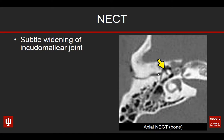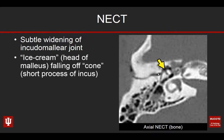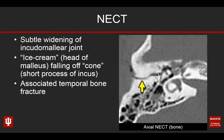Looking at the second patient, we have the axial non-contrast bone CT. What you can see is that subtle widening of the incudomallear joint, denoted here by the yellow arrow. If you look at where we have our ice cream and ice cream cone, they don't line up quite normally. The ice cream — the head of the malleus — is falling off the ice cream cone, which is the short process of the incus. That incudomallear joint space is being widened as a result of trauma. If you look carefully, there's also an associated temporal bone fracture directed right toward that ossicular chain.